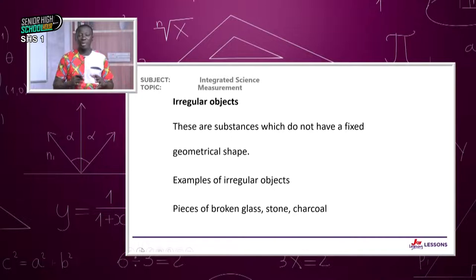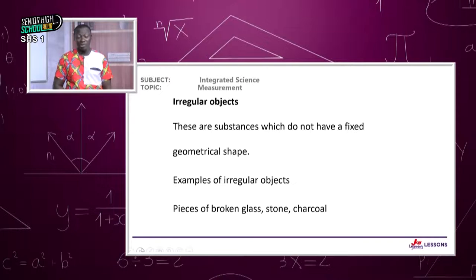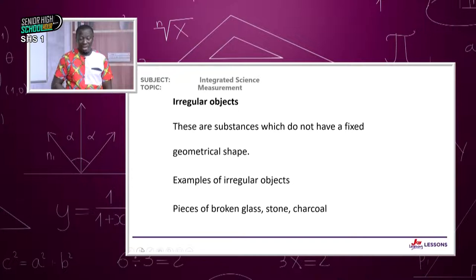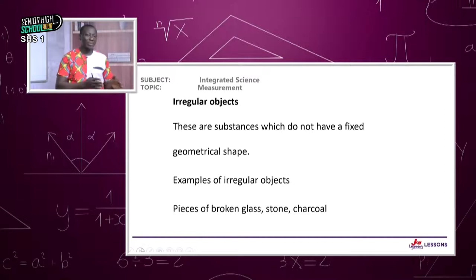To find the density of a regular object, simply weigh it on a scale to get the mass, then use a ruler or appropriate equipment to measure the dimensions and calculate the volume using the relevant formula. Divide the mass in kilograms by the volume in meter cubed to get the density.